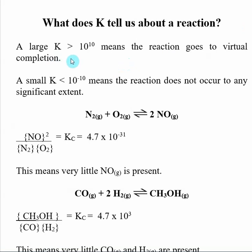If we have a large value of K, say greater than 10 to the 10th, that means the reaction goes virtually to completion, which means almost all of the reactant has gone to make a product.